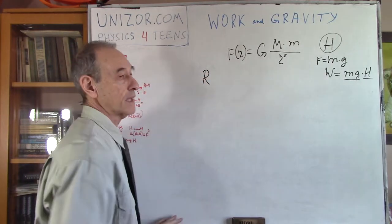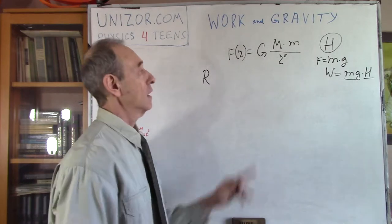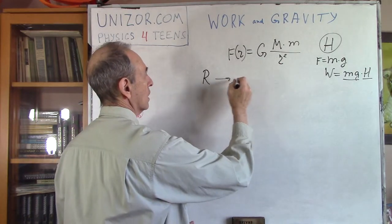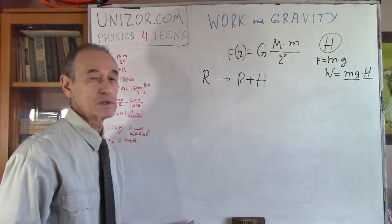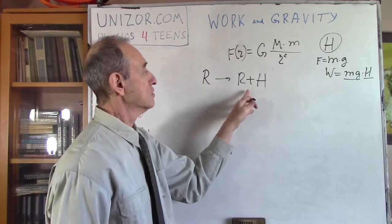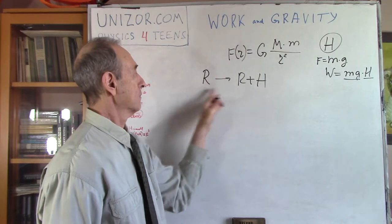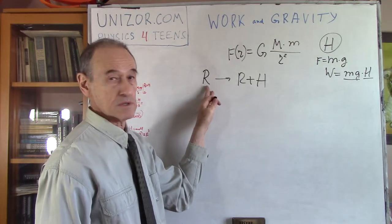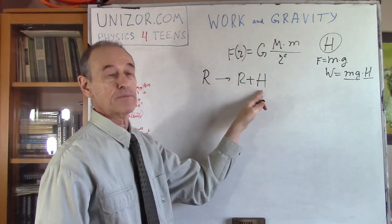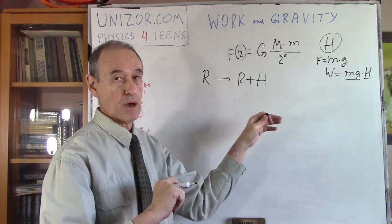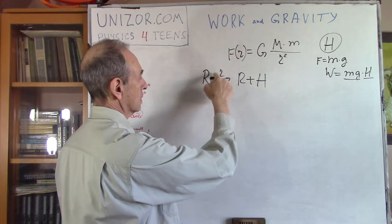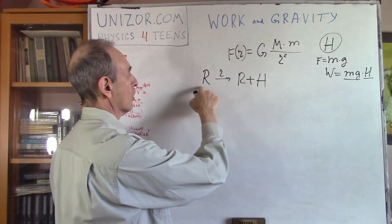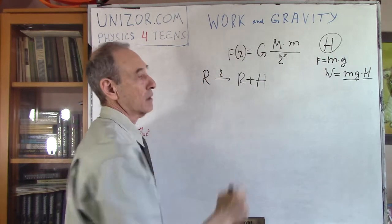And then we are trying to lift it to the difference. So, the new distance from the center would be the r, the radius of the planet, plus the height by which we have lifted our object. So, that's what we are doing. R, lowercase r, is changing from capital R to capital R plus h.